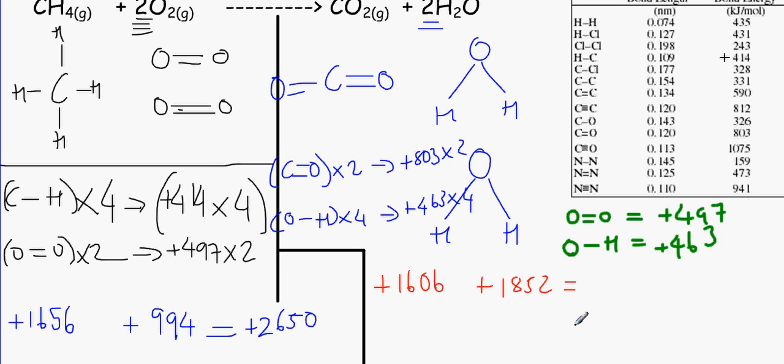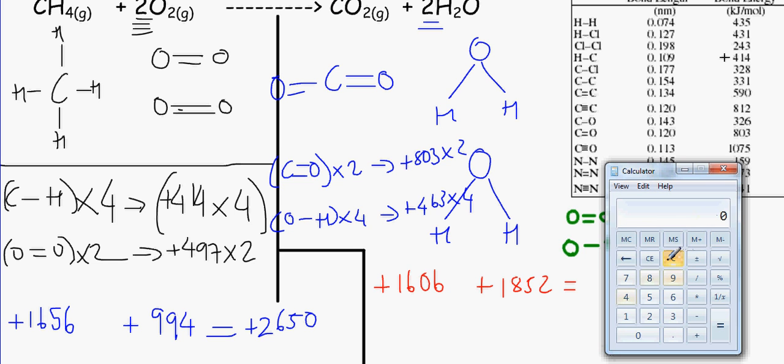The amount of energy that was in the products or the amount of the bond enthalpies of all the bonds in the products ends up to be, let's add it up together, 1,852 plus 1,606, 3, 4, 5, 8.